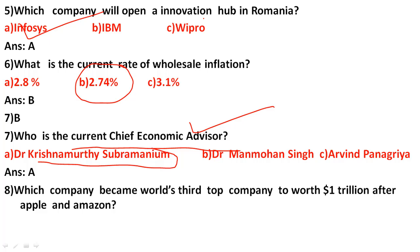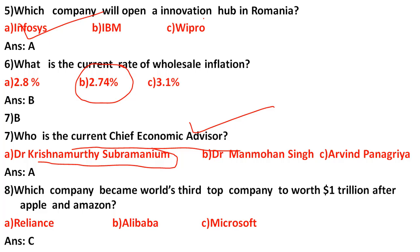Dr. Krishnamurti Subramanyam is the present Chief Economic Advisor of India. Next, which company became the world's third company to reach a one trillion dollar market cap after Apple and Amazon? The options are Reliance, Alibaba, and Microsoft. The correct answer is option C: Microsoft.